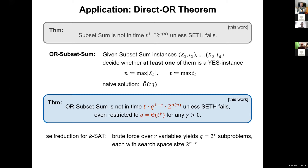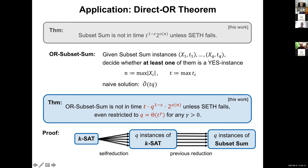For subset sum, we cannot use this argument directly — there is no simple self-reduction. But we can combine the two: start from a k-SAT instance, apply the self-reduction to get q instances of k-SAT, then use the known reduction from k-SAT to subset sum on each instance. We arrive at q instances of subset sum, and solving the Or of these resolves the original k-SAT instance. This gives the hardness for Or-Subset-Sum.